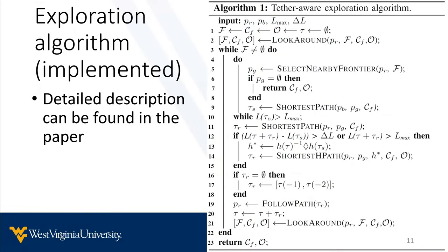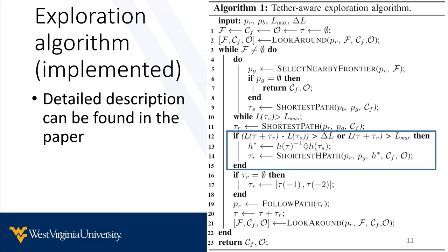Here's a more formal representation of our implemented algorithm, details for which can be found in our paper. Lines 12 through 15 are the main contribution of this algorithm, where our homotopic planner shortest H-path is triggered if either the length tolerance delta L is exceeded – meaning that the path the robot would take would be much longer than the shortest path from the base – or if the tether itself would exceed its maximum length. H-star is always going to be the same homotopy as if the robot would return to the base and then take the shortest path to the goal, which doesn't mean that the robot would actually go to the base.